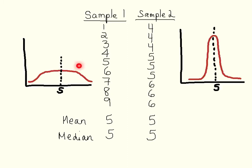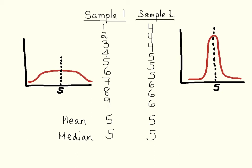This shows what the distributions might look like for each of these samples. In each case, the mean and the median are five, which is the value at the center of the distribution. But in one of them, the spread is much wider around the central tendency, meaning the variation is higher. So you can look at the distributions and, based on their shape, get a sense of the variation in the sample.